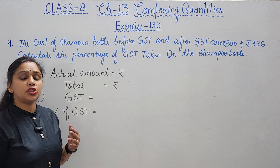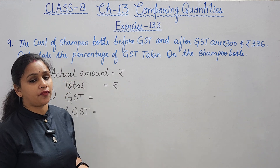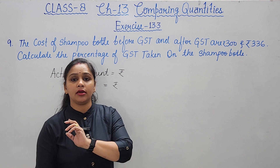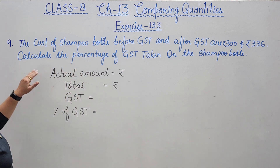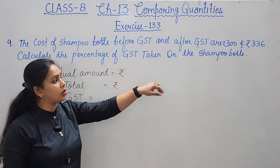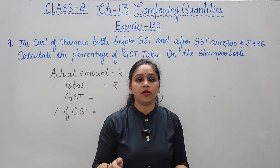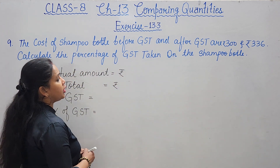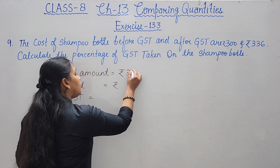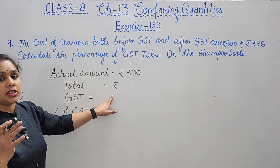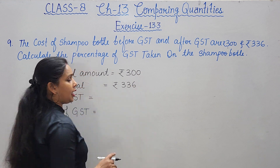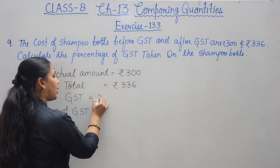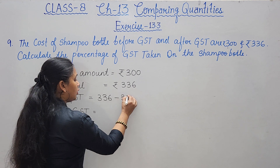Question 9: the cost of a shampoo bottle before GST is 300 rupees and after GST is 336 rupees. Calculate the percentage of GST on the shampoo bottle. The actual amount was rupees 300; total paid after GST = rupees 336. GST amount = 336 - 300 = rupees 36.